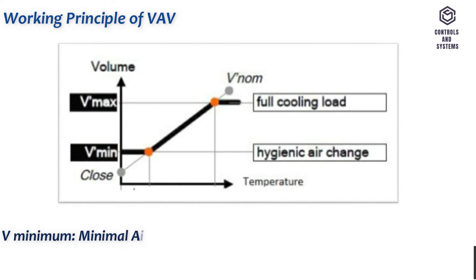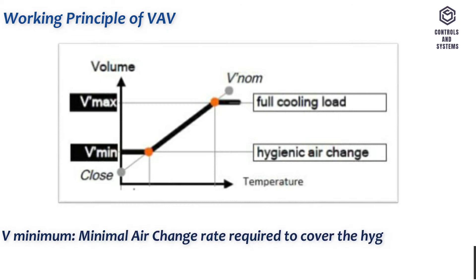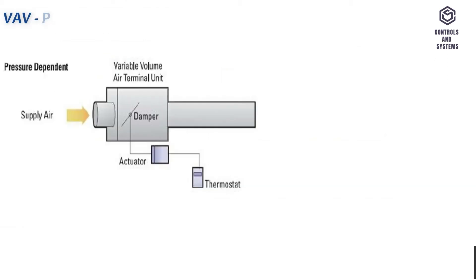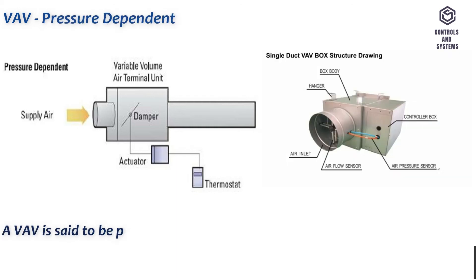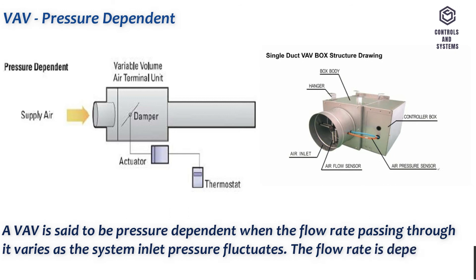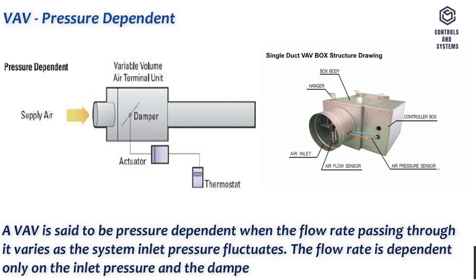V minimum is the minimal air change rate required to cover the hygienic condition. V maximum is the full load or full cooling demand. A VAV is said to be pressure dependent when the flow rate passing through it varies as the system inlet pressure fluctuates. The flow rate is dependent only on the inlet pressure and the damper position of the terminal unit.